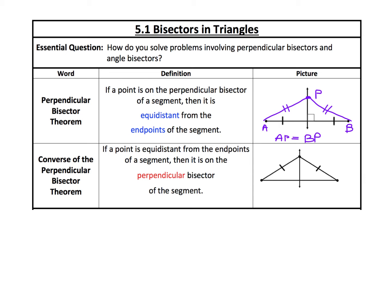This theorem can be proven using congruent triangles. We already have one pair of congruent sides marked because it's a bisector, and one pair of congruent angles because it's perpendicular. The point along the third side creates another side, giving us a side, an angle, and a side. These triangles are congruent by SAS, making AP equal to BP because corresponding parts of congruent triangles are congruent — going back to the triangle proofs from last chapter.